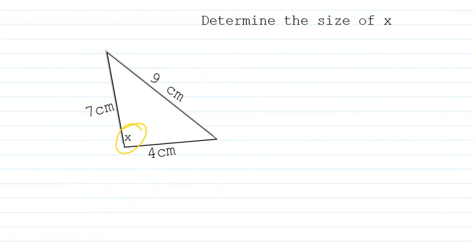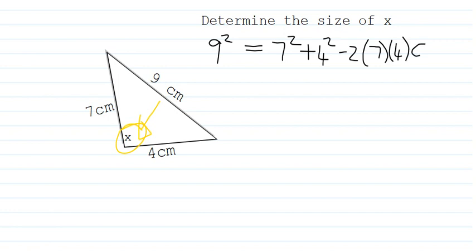I have one side which is going to be 9 squared. I start with that side because it's opposite the angle. Then I have my other side 7 squared plus 4 squared minus 2 times 7 times 4, and cos of that angle. I don't know what it is, so I write x. What I'm going to have to do is solve this as a normal equation to find x.